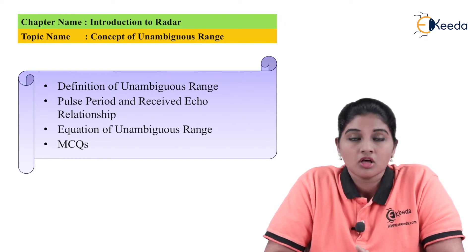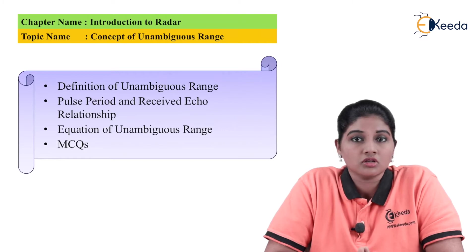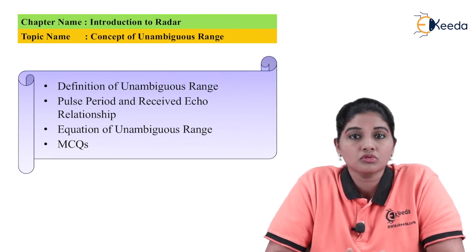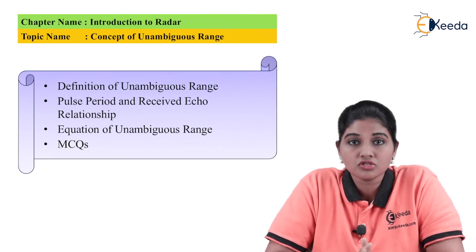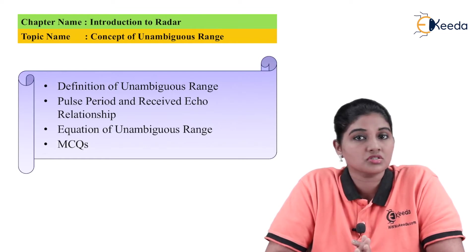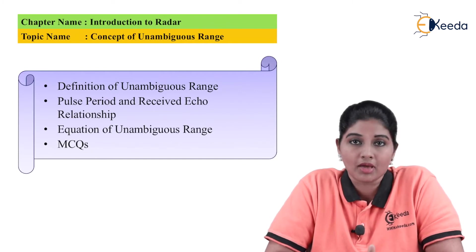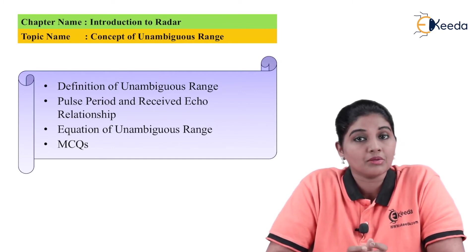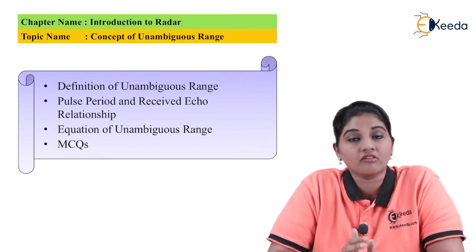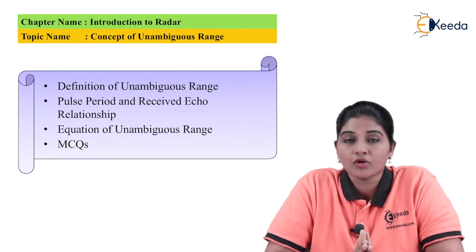That return signal is called the echo signal. This simple radar range equation is easy to implement, but when we use radar in practice, it is not possible to use the same equation, because the performance of the radar is practically affected by many parameters which may cause the range value to change.